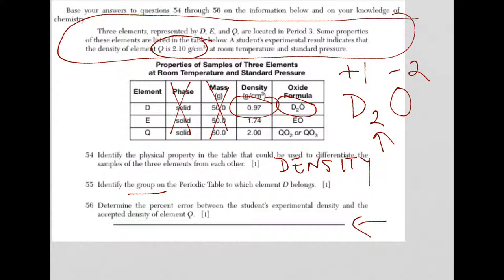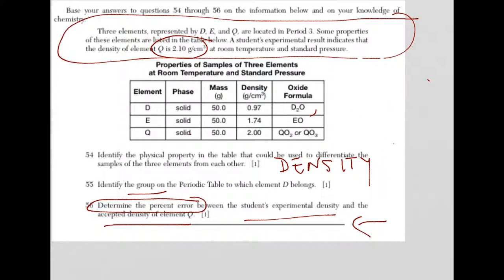Let's move on to question 56. We're looking for a percent error. We're going to determine that, which means I have to calculate that between the students' experimental and the accepted density for Q. So I'm going to erase some of this to make it easier to see.